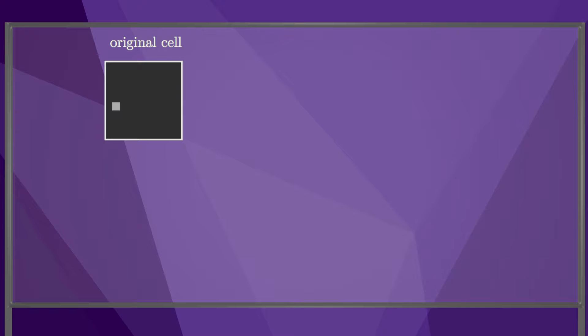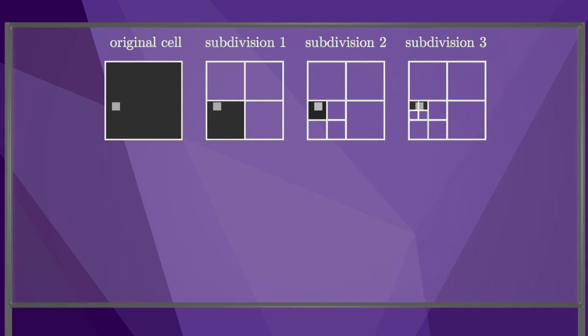As an example, imagine this dark gray box is a cell of the C space, and the lighter box is a C space obstacle. If we used a fixed resolution to represent the C space, then this whole cell would be marked as in collision. If we subdivided the cell into four cells, then only one of them would be in collision. We can subdivide again, then subdivide again, and in the end the original C space cell is represented by a tree that looks like this.